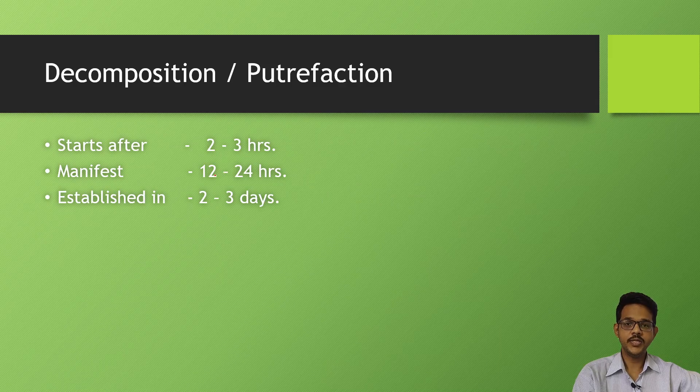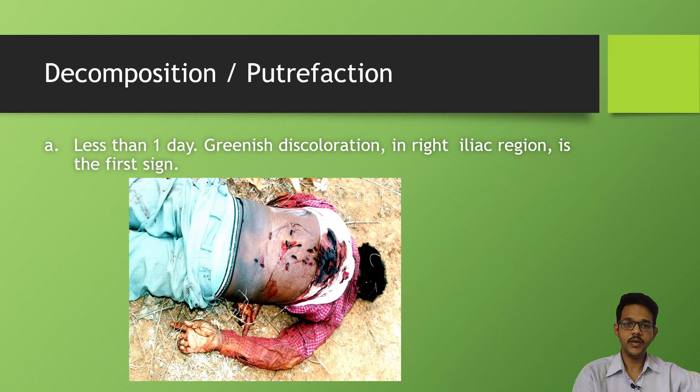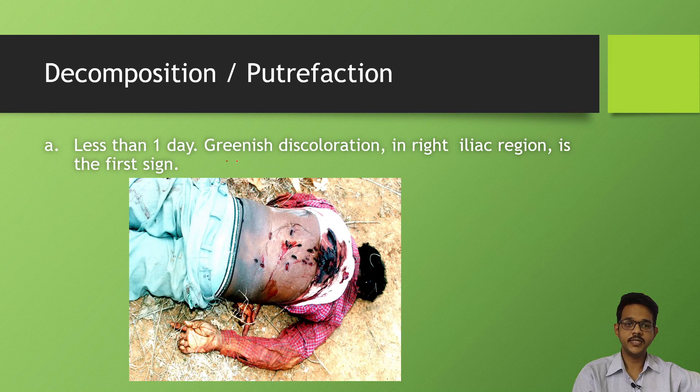Putrefaction starts 2 to 3 hours, manifests in 12 to 24 hours, and is established in 2 to 3 days. In less than one day of putrefaction, greenish discoloration occurs in the right iliac fossa, which is seen as the first sign of putrefaction.